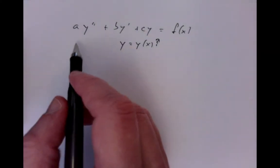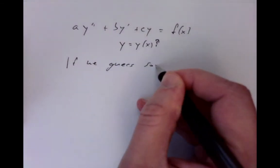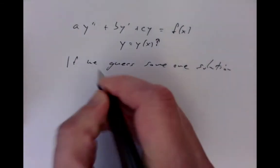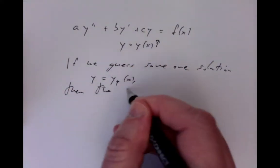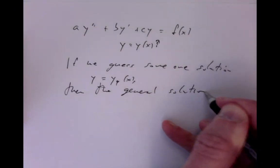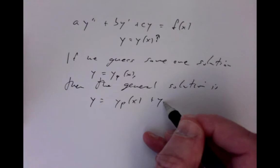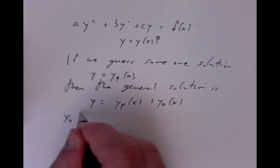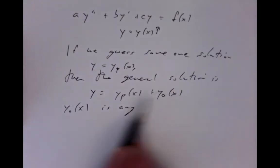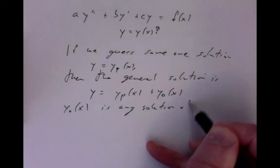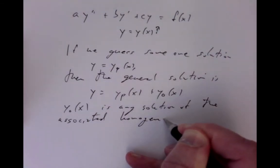We know a general fact about equations with inhomogeneities: if we can somehow guess one solution — often called a particular solution, y equals yp of x — to this equation, then the general solution, every possible solution, is that y equals the particular solution plus any solution of the homogeneous equation, y0 of x.